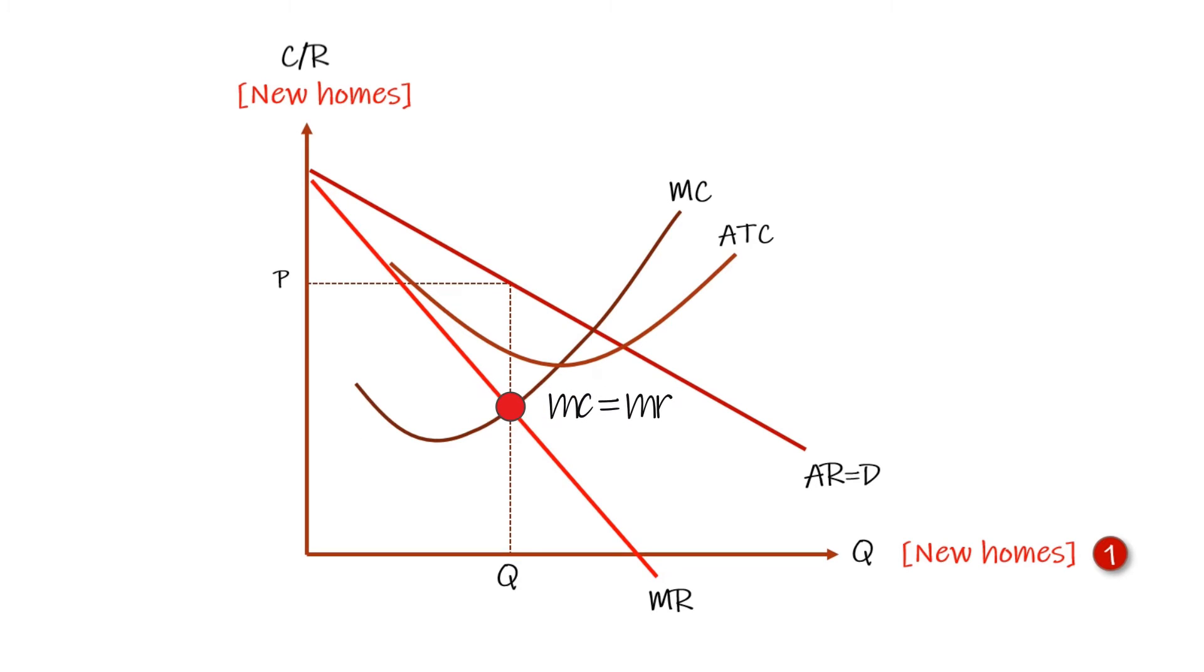Next, show the area representing supernormal profits at profit-maximizing output. The area under the average total cost curve equals total costs, while the area under the average revenue curve equals total revenue.